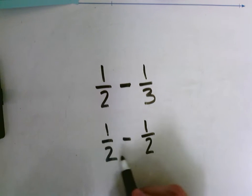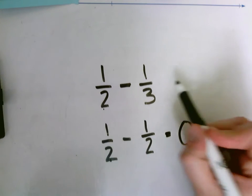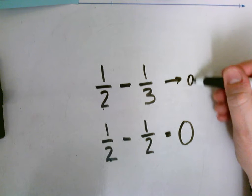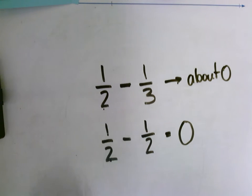So now I can easily do this problem. One half minus one half equals zero. So one half minus a third is going to be about zero, close to zero. Let's try another example.